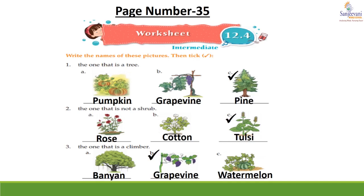Children, now come to page number 35, worksheet 12.4 — write the names of these pictures, then tick. You have to write the names in the given blank and tick the picture according to the category. First: the one that is a tree — correct option is C. A part: you will write pumpkin — P-U-M-P-K-I-N. B part: this picture is grapevine — G-R-A-P-E-V-I-N-E. C is pine — P-I-N-E.